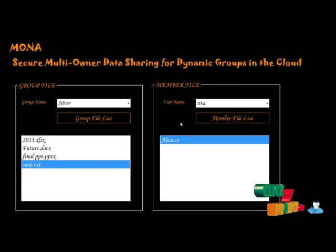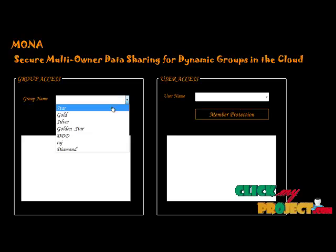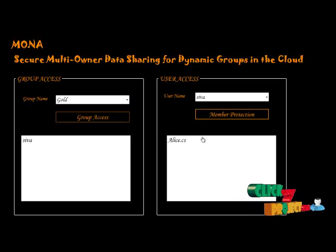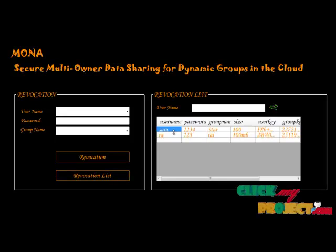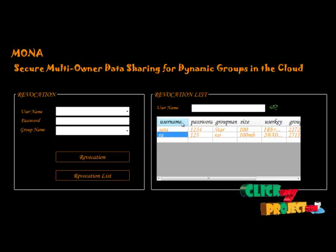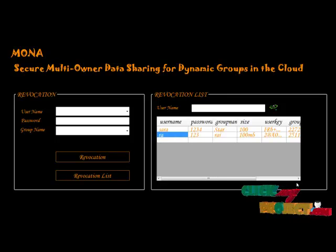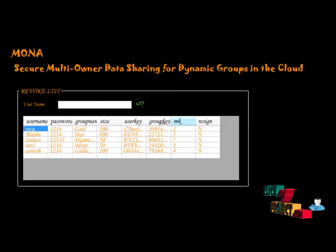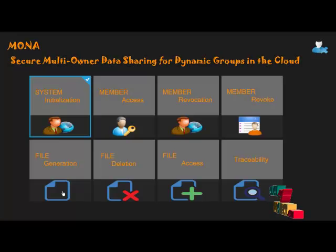We direct to the file information and check the file access details — what files are accessible for the client. This file is available under 'Siva'. Now checking the revocation list: there are two users on the revocation list — SA and RA. They are not allowed access to the multi-user group member area. These are the revoked users currently online. We also see the file generations, file deletions, and file access details.